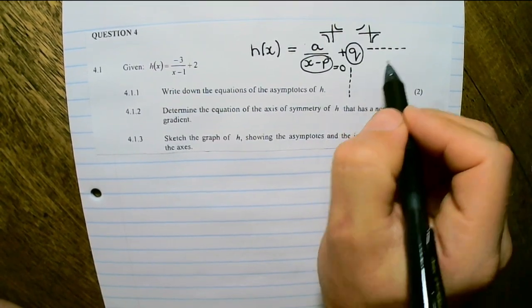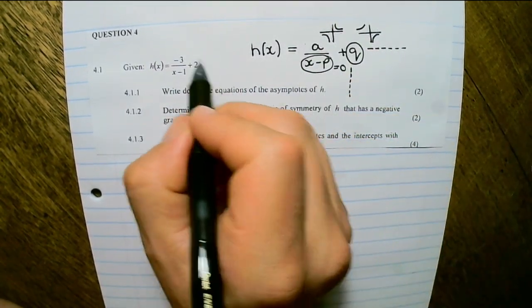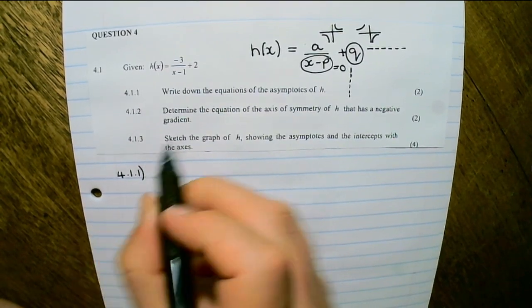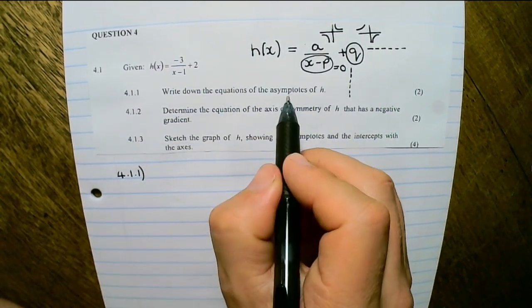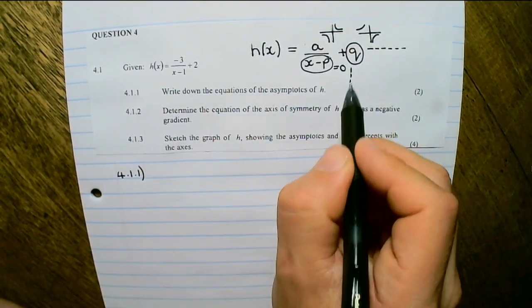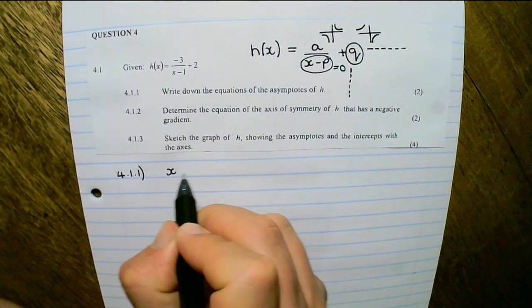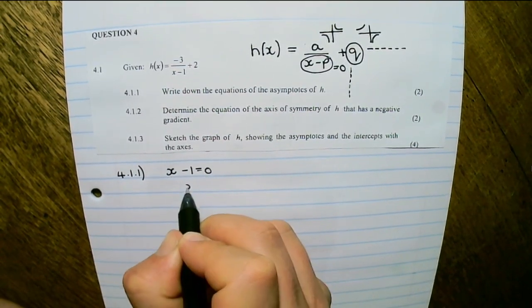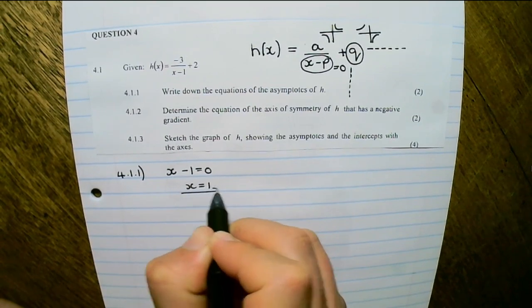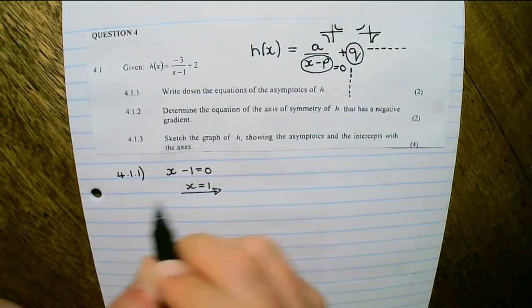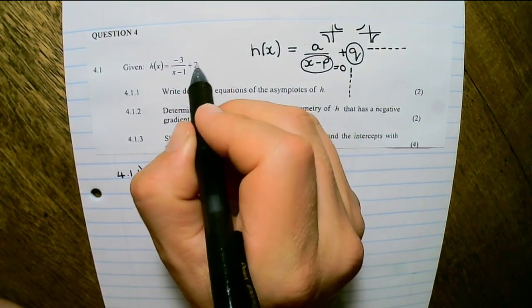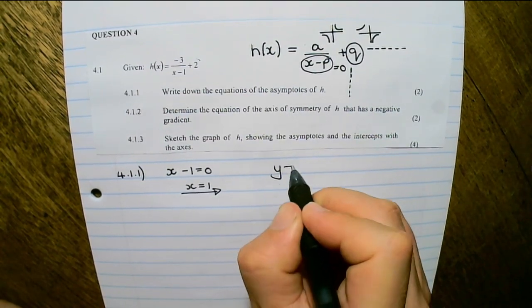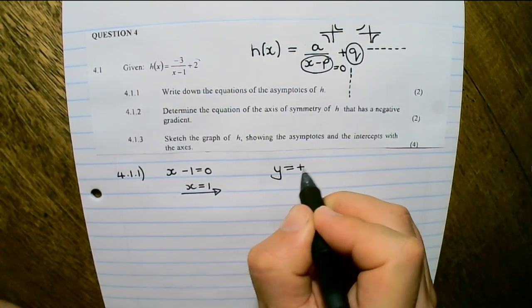Applying that information, the vertical asymptote is x minus 1 equals zero, therefore x equals 1. The horizontal asymptote is simply the Q value which is plus 2, so y equals 2.